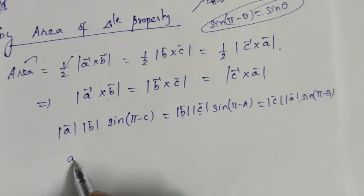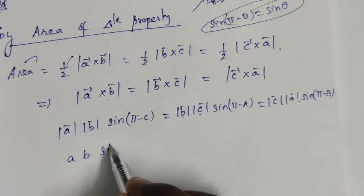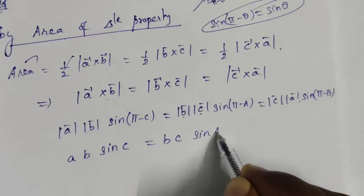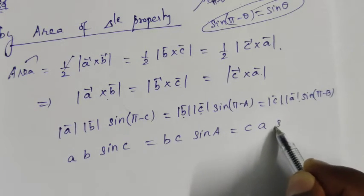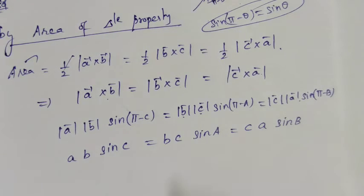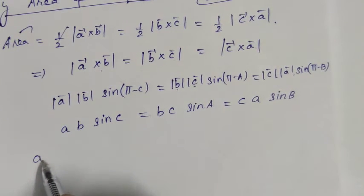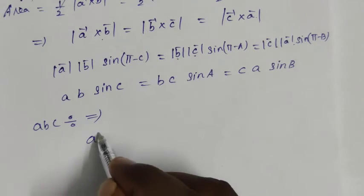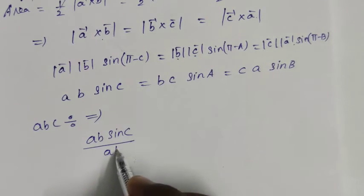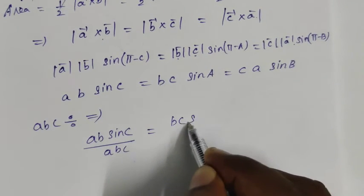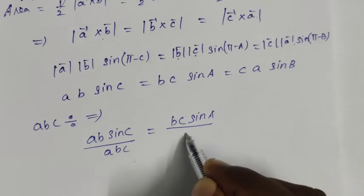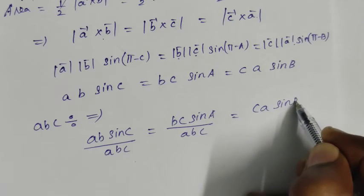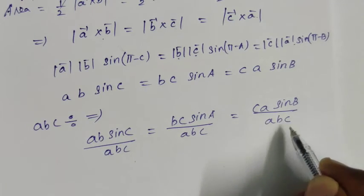So this gives us: a·b·sin C = b·c·sin A = c·a·sin B. Dividing through, we get: a·b·sin C / (a·b·c) = b·c·sin A / (a·b·c) = c·a·sin B / (a·b·c). This simplifies to: sin C / c = sin A / a = sin B / b.